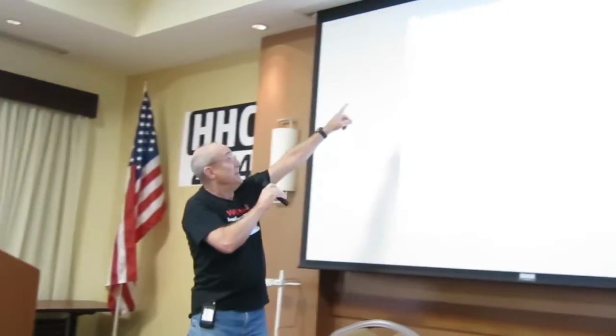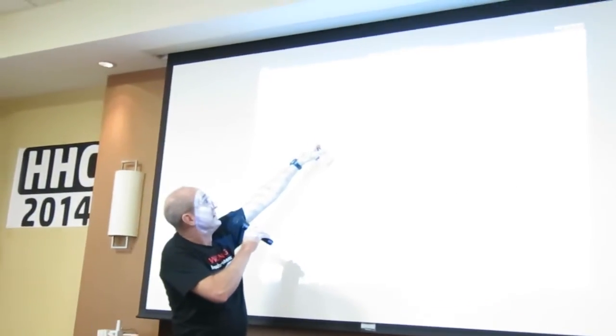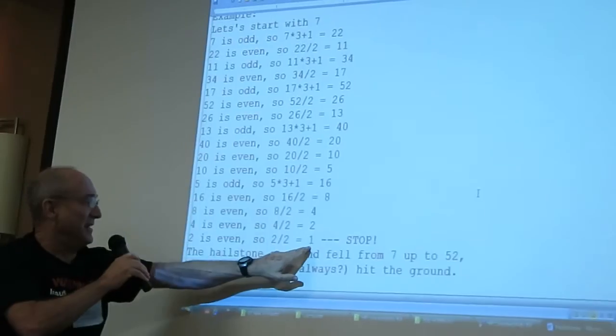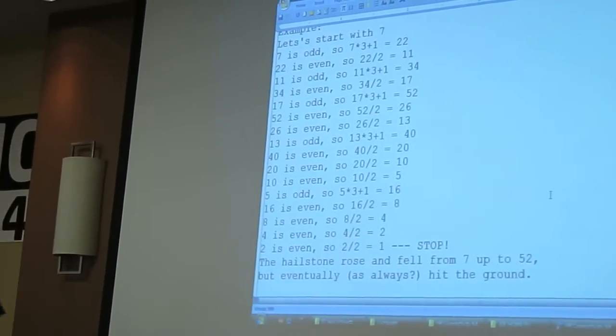Just like this number. We started at 7, blew up and down, bigger, smaller, bigger, smaller, all the way up to 52 and then eventually hit the ground. If you start with 27, it gets all the way up to 9,000 something before it gets down to 1. It's over 9,000. It's just a study.